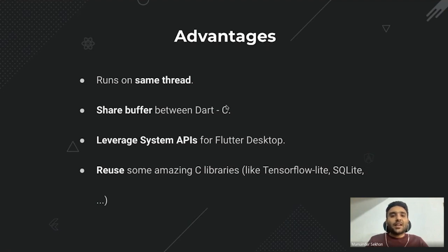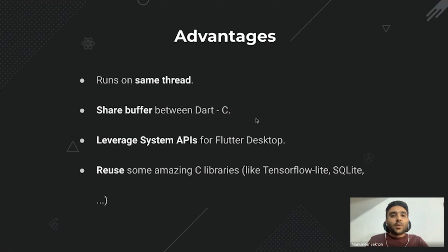Take an image matrix as an example. When dealing with that computation on the Dart side, we don't need to copy the entire image matrix into Dart format, because in C we already have a pointer to that memory. Dart FFI gives us utility functions to view that memory using that pointer directly on the Dart side.